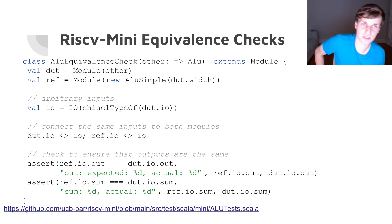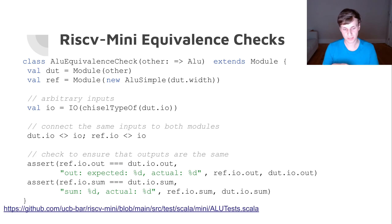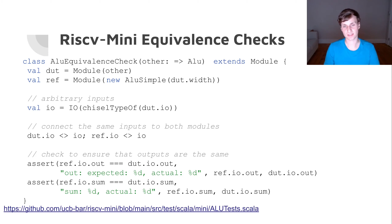Another example: the RISC-V mini CPU developed at Berkeley has different ALU implementations. Previously they were tested by running tests on both the simple and more complicated ALU. Instead, we can test one ALU and do an equivalence check: create a shared I/O, connect both the reference and the implementation under test, and check that the outputs are the same. These ALUs have no state elements, so a bounded check of one is enough, and it only takes a second or two.